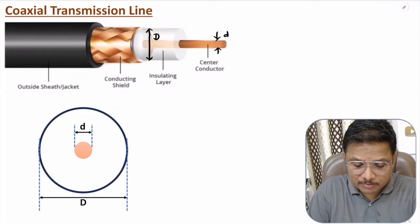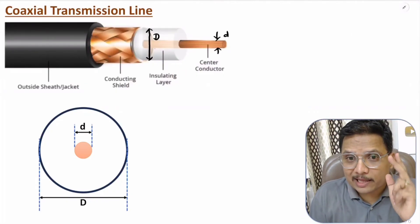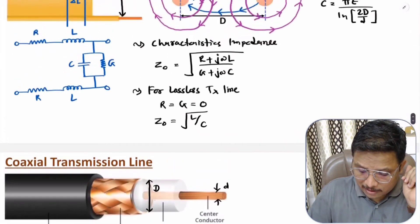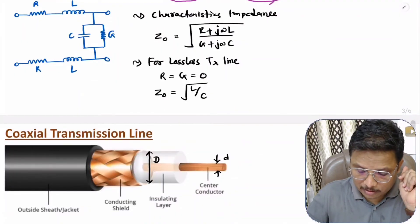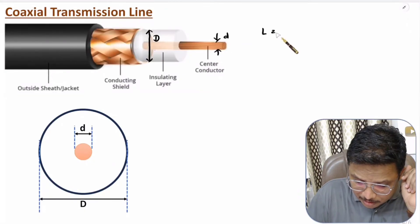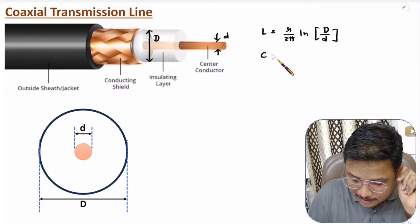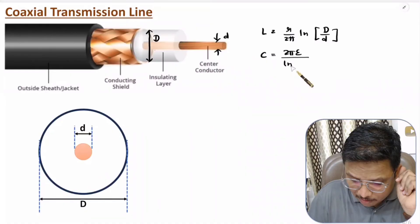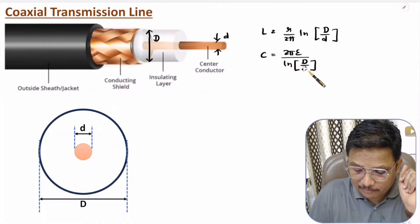With this coaxial transmission line, the inductance L = μ/(2π) · ln(D/d), and capacitance = 2πε / ln(D/d). By these equations we can identify inductance and capacitance, and that will define the characteristic impedance of the coaxial transmission line.